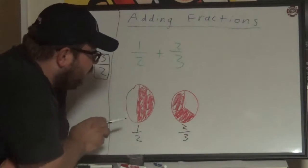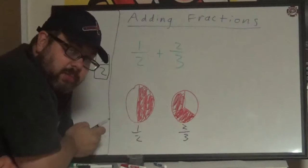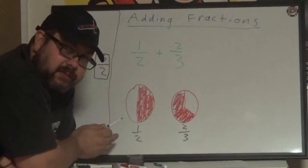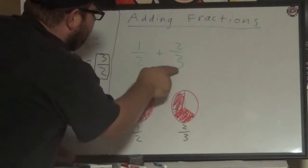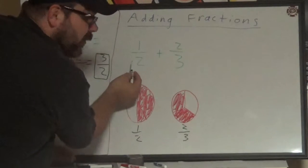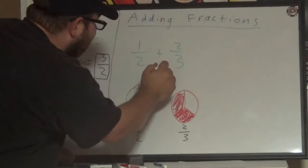In order to find a common denominator, the first thing we want to do is look at our two numbers, and a trick that will always work is to multiply both numbers together. So one over two and two over three, our first denominator is two and our second denominator is three. We can multiply those together.